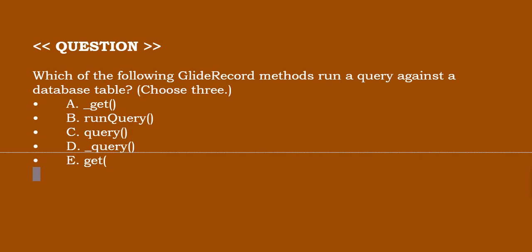Which of the following GlideRecord method runs a query against a database table? You can read the given options. The correct answer is option C.